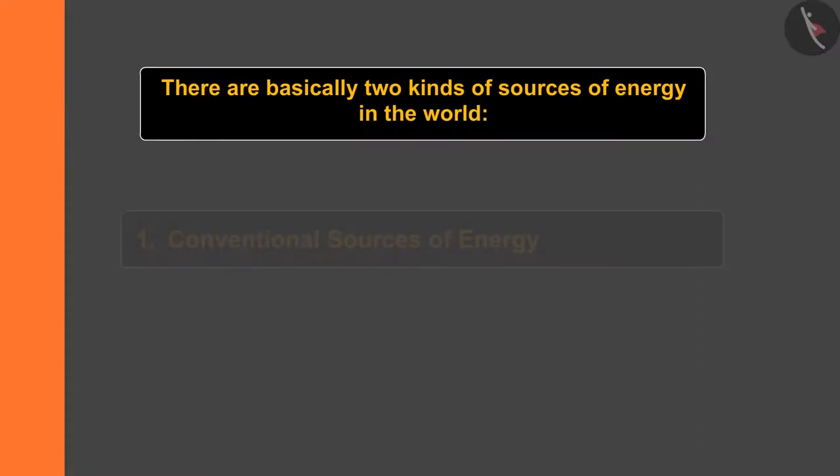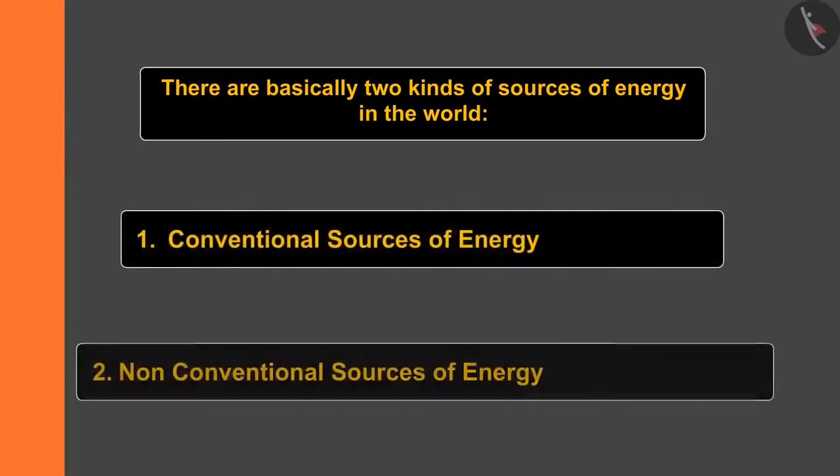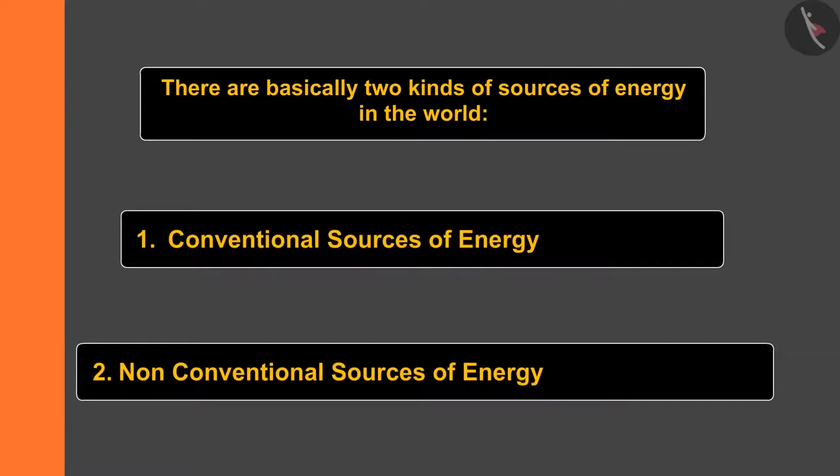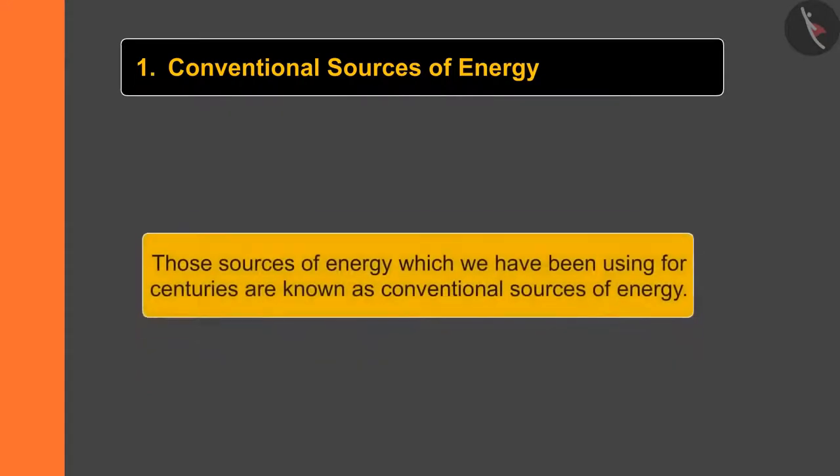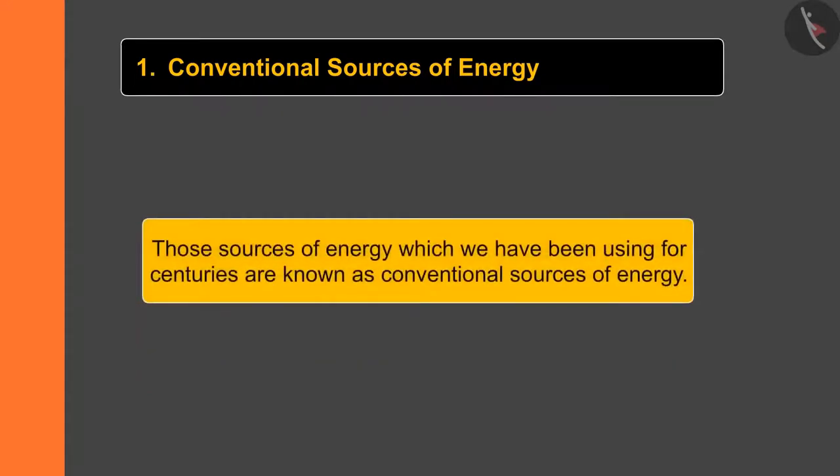There are basically two kinds of sources of energy in the world: one, conventional sources of energy; two, non-conventional sources of energy. In today's video we'll learn about the conventional sources of energy.